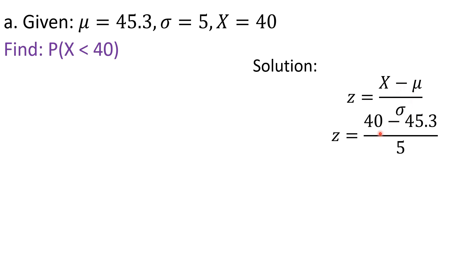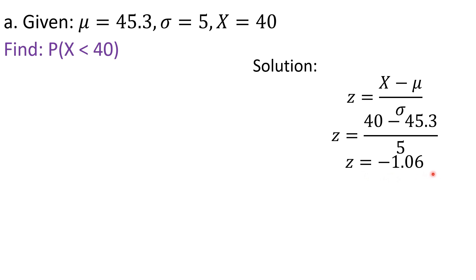By substitution, x is 40, the mean is 45.3, and the standard deviation is 5. So 40 minus 45.3 is negative 5.3, divided by 5. Using a calculator, z is equal to negative 1.06.